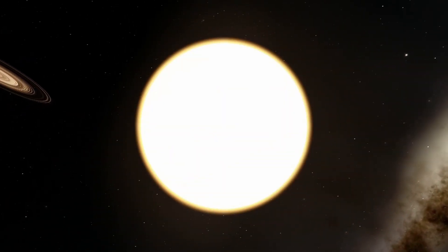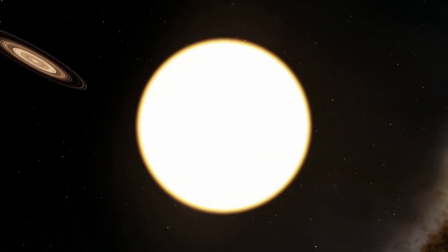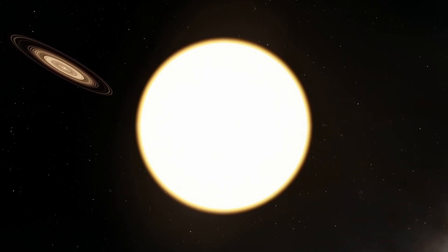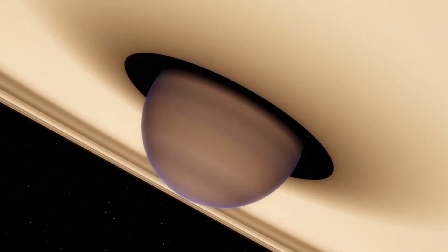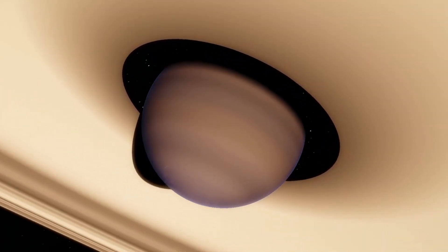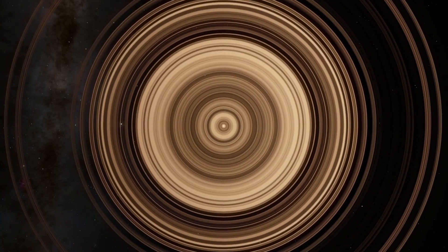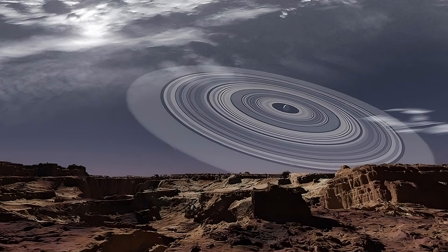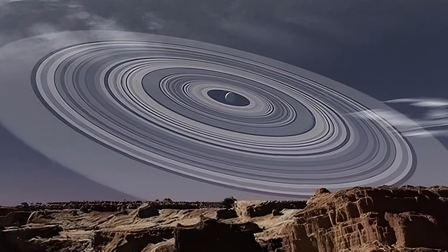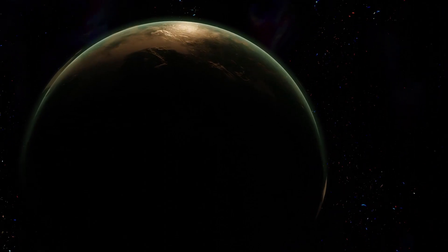J1407b orbits its parent star J1407. The planet has more than 30 rings. If we replaced Saturn with J1407b, the rings are 10 times more massive and will be visible by both day and night.